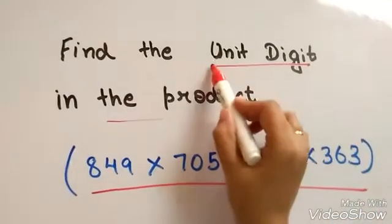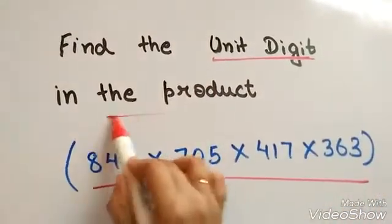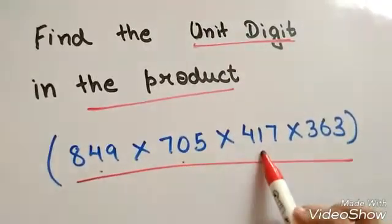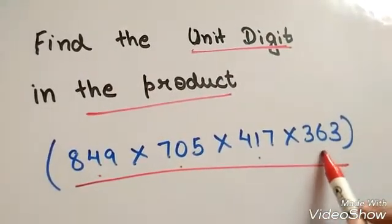Now let's see, find the unit digit in the product 849 into 705 into 417 into 363.